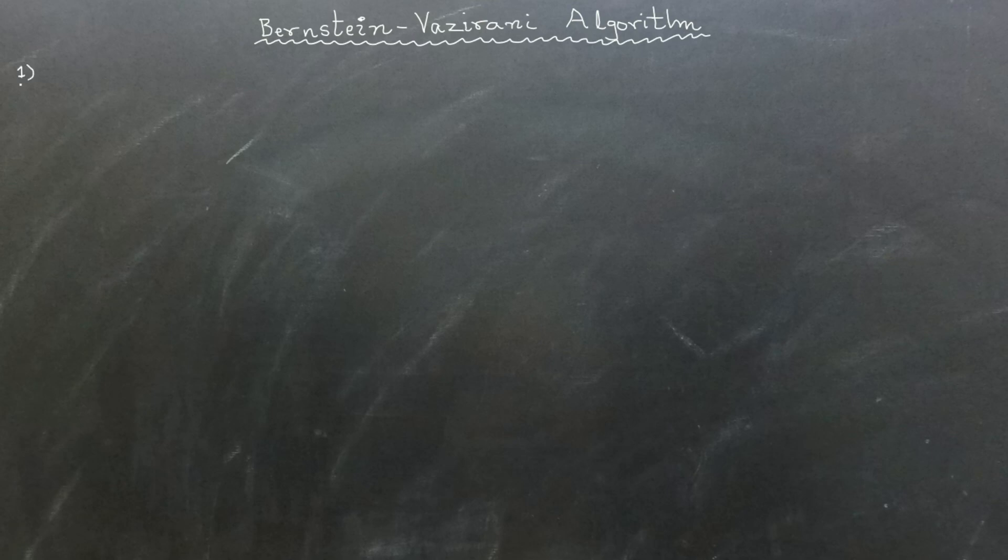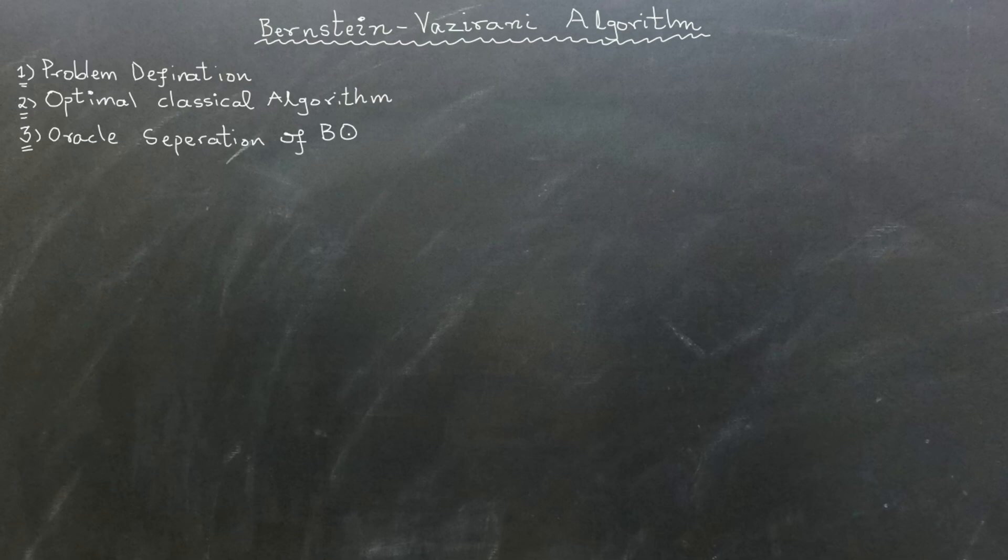We will start by explaining the Bernstein-Vazirani problem definition. Next, we will describe the optimal classical algorithm that can be used to solve this problem. Then we will discuss the oracle separation between BQP and BPP complexity classes and what is meant by oracle separation. Finally, we will present the quantum algorithm to solve the Bernstein-Vazirani problem.